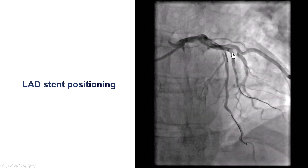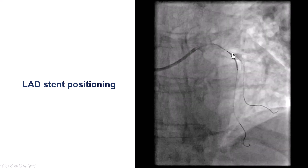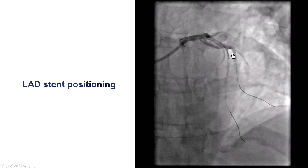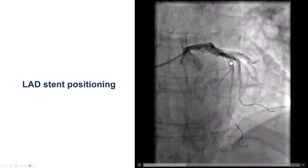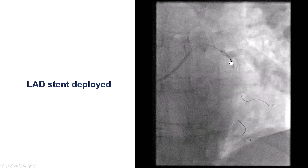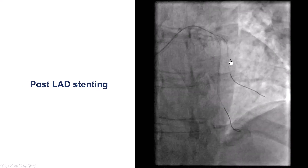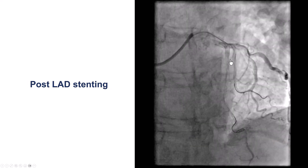We did have the balloon there, so we did the balloon inflation, crushing the diagonal stent. Then, after we rewired, we did the first kissing balloon inflation, and then we placed the LAD stent across the origin of the diagonal branch. We deployed the LAD stent, jailing the diagonal, and we now have good flow, but we need to rewire and do the final kissing balloon inflation.